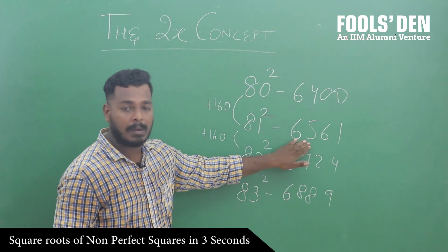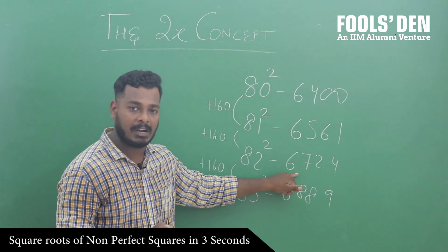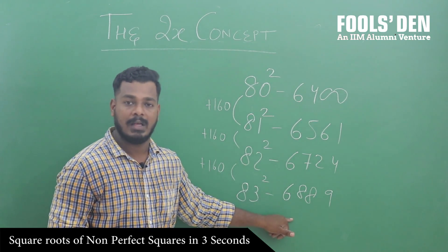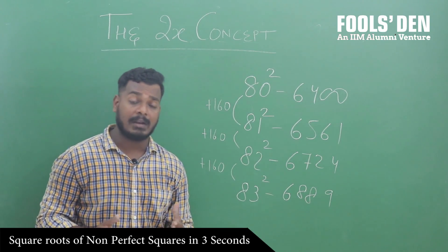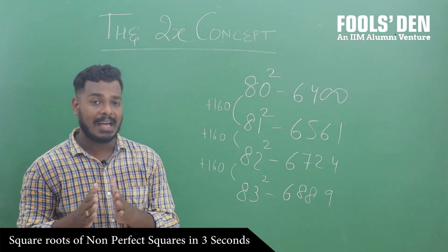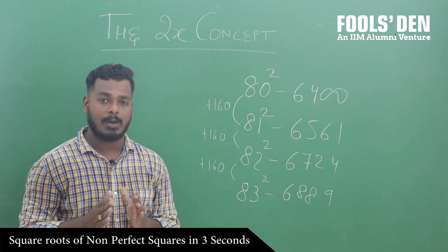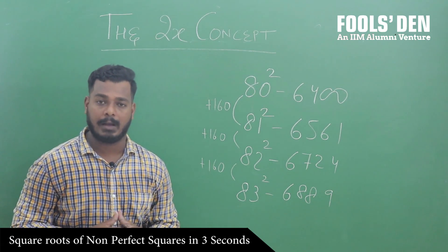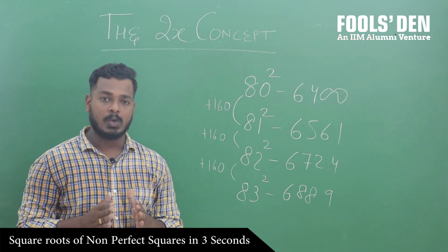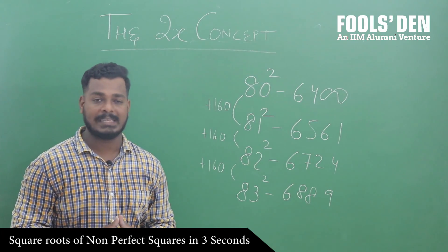इस number और इस number में approximately 160 का difference है, और हम definitely इस concept को generalize कर सकते हैं. अगर मैं 70 से आगे बढ़ूं, तो हर अगला square करीबन 70 का double, that is 140 से बढ़ेगा. अगर मैं 90 की series में आगे बढ़ूं, squares में, तो हर अगला square करीबन 90 का double, 180 से बढ़ेगा.